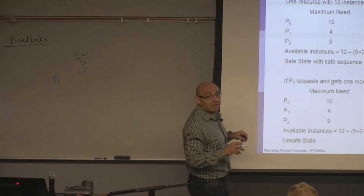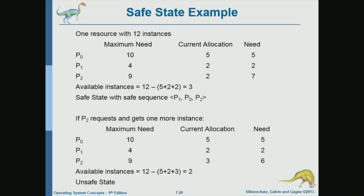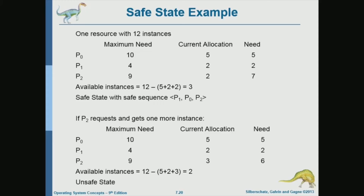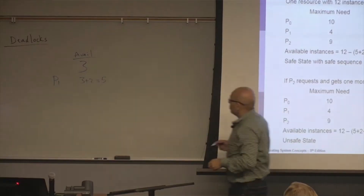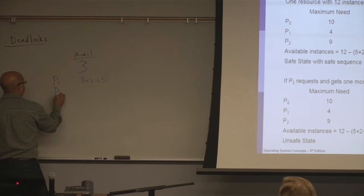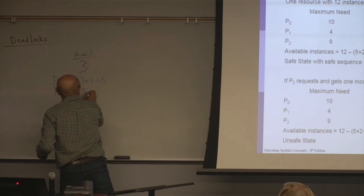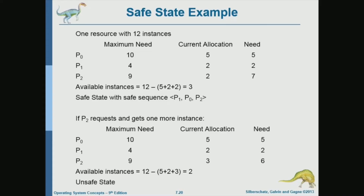After P1 is done, it will release the 2 instances it holds, so we will have 3+2=5 instances available. Now with 5 instances available, which other process can go? P0 can go — P2 cannot because P2 needs 7 and we only have 5. So we put P0 next. After P0 is done, how many instances would we have? We'll have the 5 plus the 2 that P0 currently holds, wait — actually P0 holds 5.